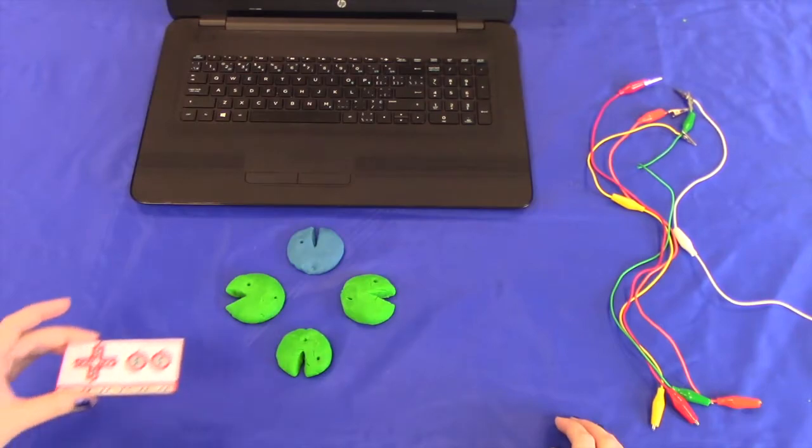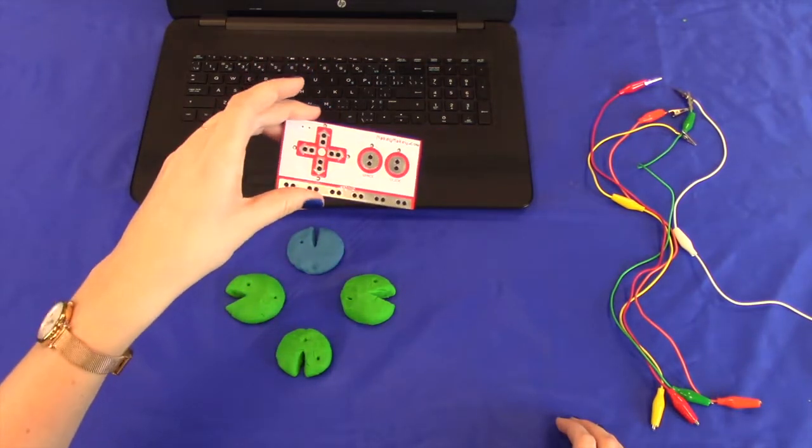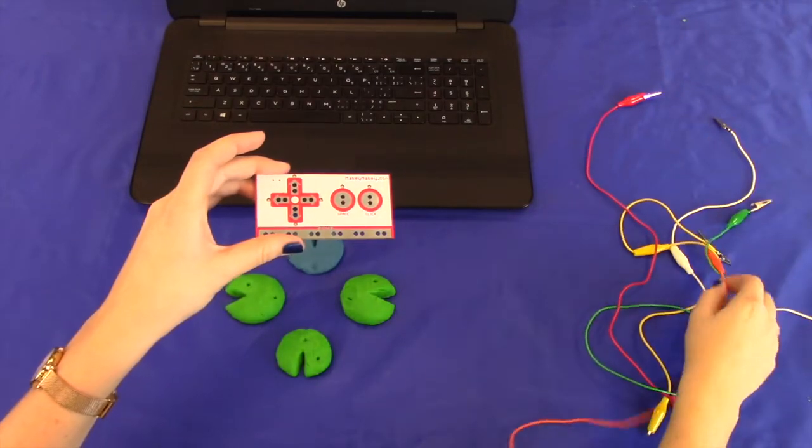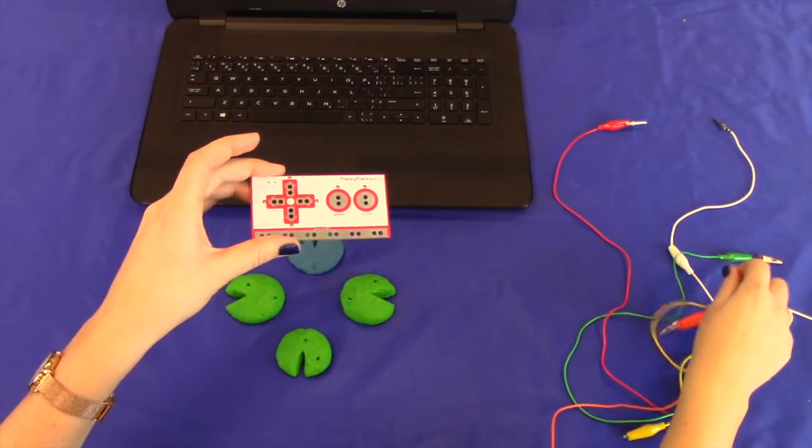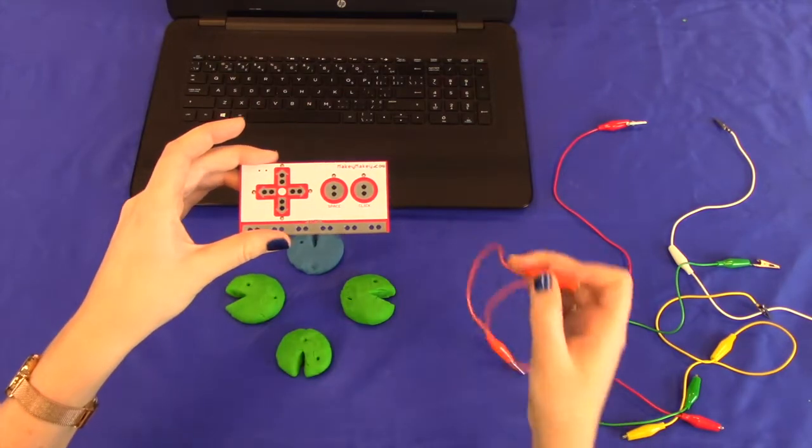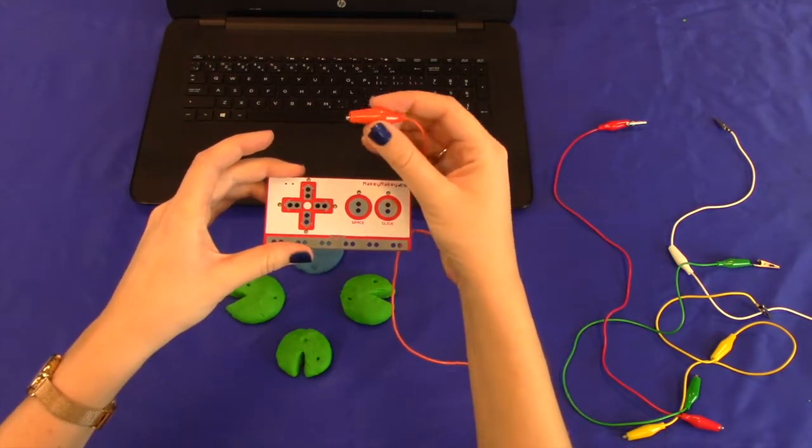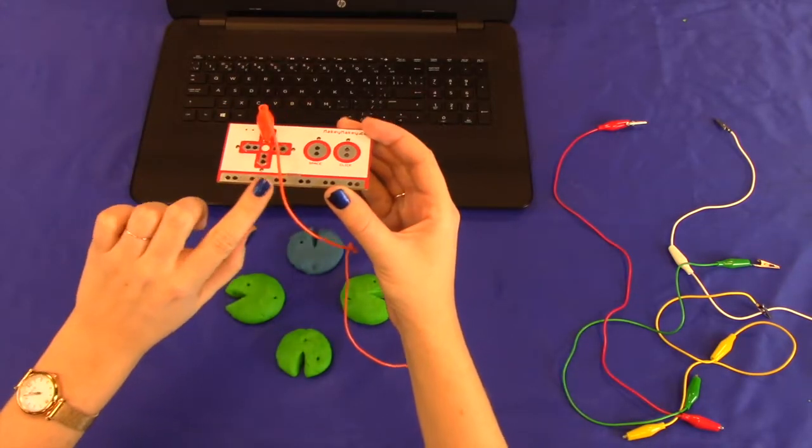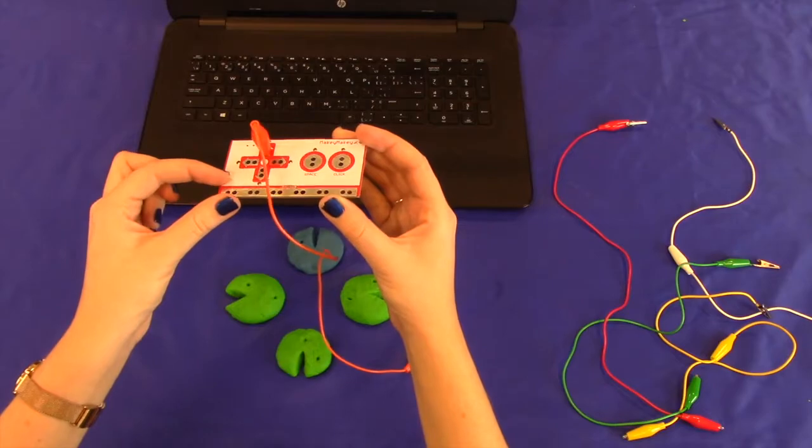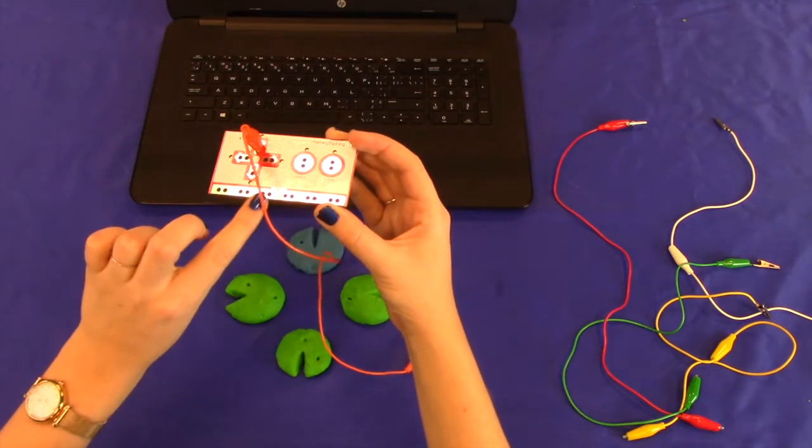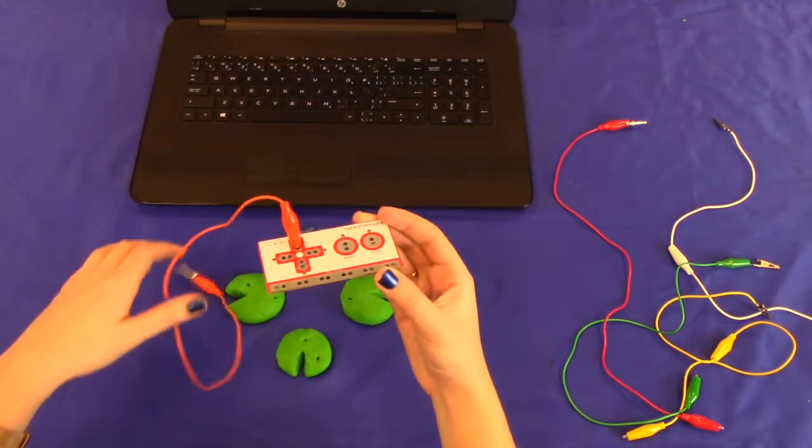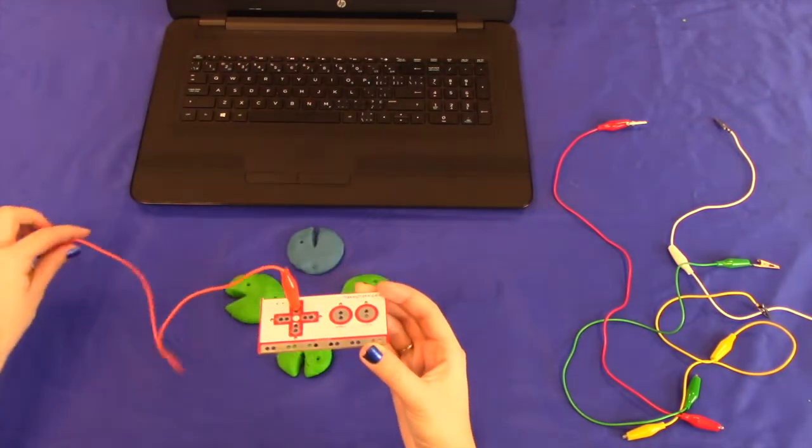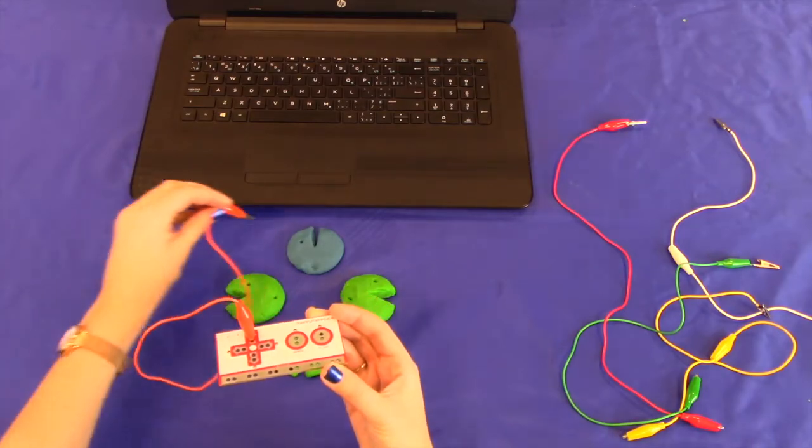The first thing you're going to want to do is take your Makey Makey board, and we're going to start attaching some of our alligator clips. First, let's attach the upward direction alligator clip. The bottom is this gray section here, and these are all going to be grounding cables. I'll show you how we're going to use those in a moment. We've connected the upward facing arrow, which we'll use to control the direction our Pac-Man travels in.